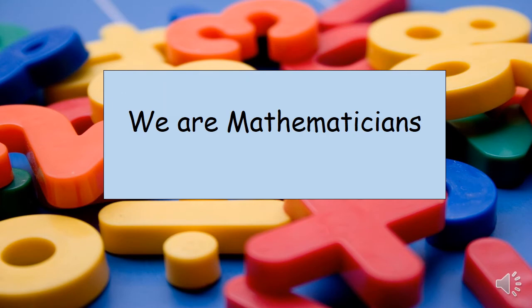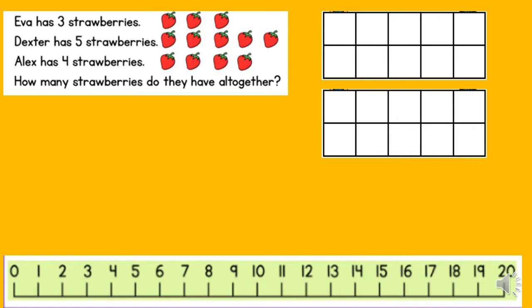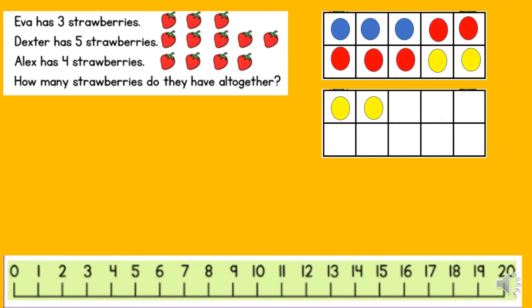Every day, Monday to Friday, we have numeracy lessons where we all become mathematicians. Let's have a look at some information we've been learning in previous lessons. Eva has three strawberries, Dexter has five strawberries, Alex has four strawberries — how many strawberries do they have all together? We're using 10 frames and counters to help us add three, five and four strawberries. We automatically know that one of these frames holds 10 counters, so we don't have to count all the counters. We can do one ten and two ones, so we know there are 12 strawberries all together.